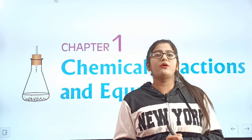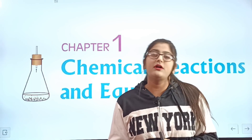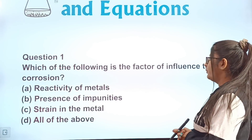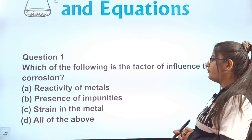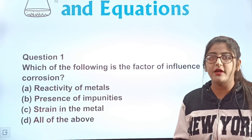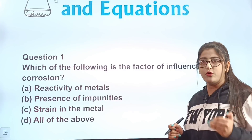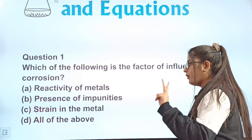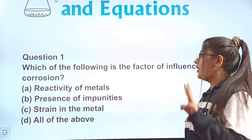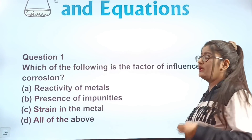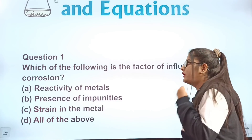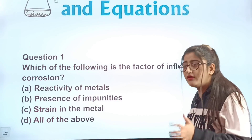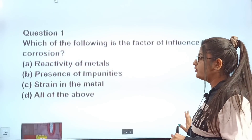Let's discuss the most important questions for Chapter: Chemical Reactions and Equations. Question number 1: Which of the following is the factor that influences corrosion? Option A: reactivity of metal. Option B: presence of impurities. Option C: strain in the metal. Option D: all of the above. Read the question once again and write your answer in the comments.